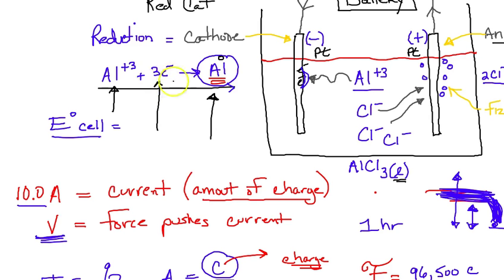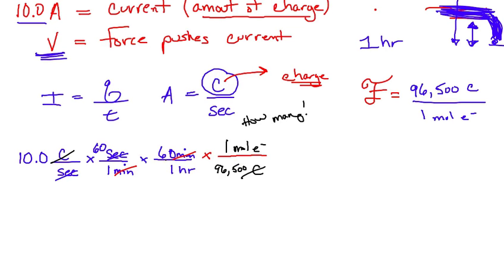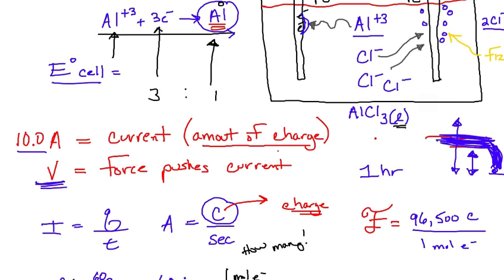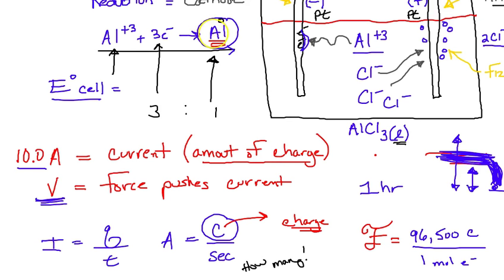So for every one aluminum atom that's made, three electrons are necessary. And that I can use my stoichiometric ratios to get how much aluminum. It's a three to one ratio. There's three electrons for every one aluminum made. So if you think this through, if whatever this comes out to be mathematically, doesn't it make sense a third of it is how many aluminum atoms are made?